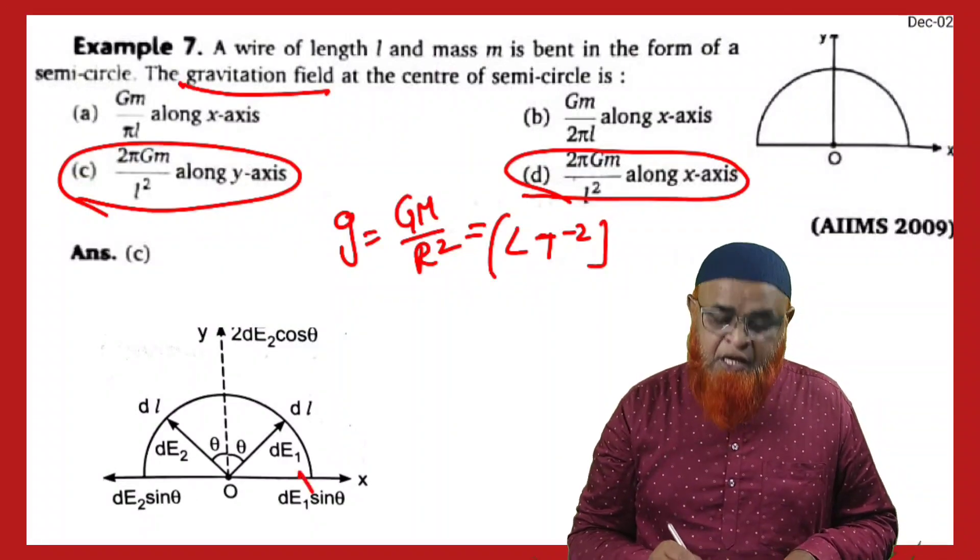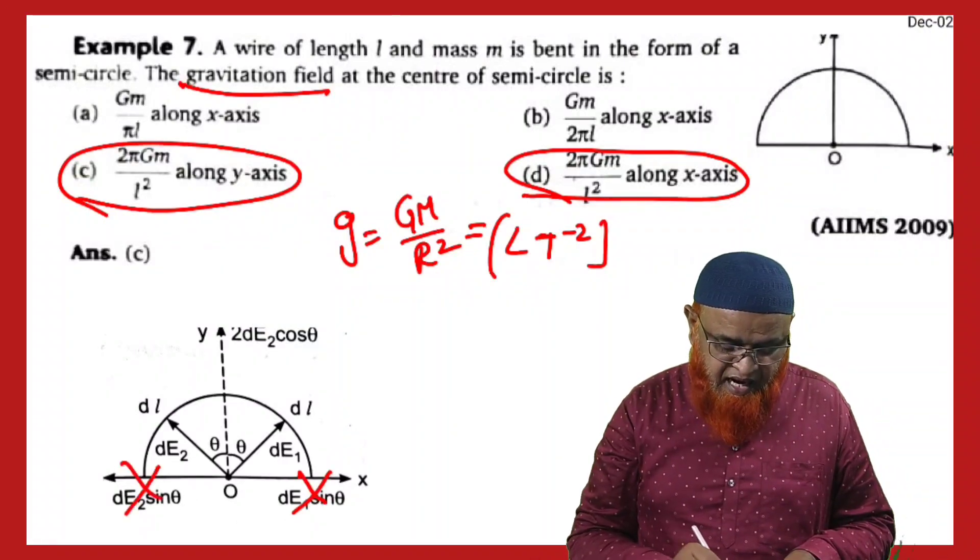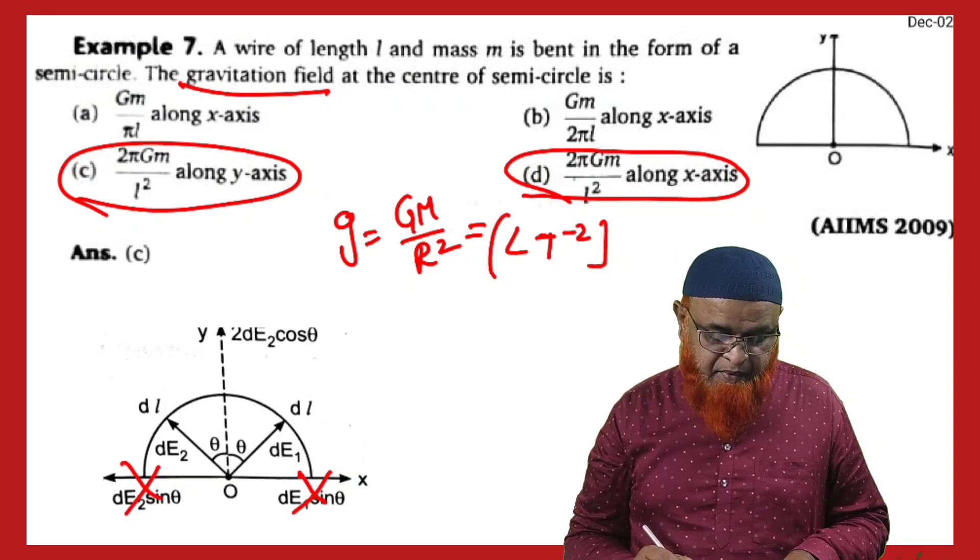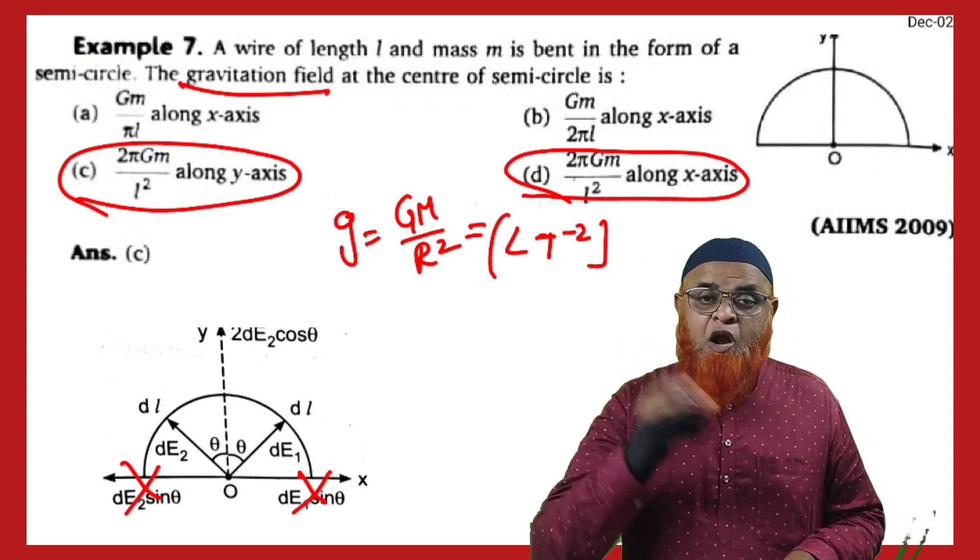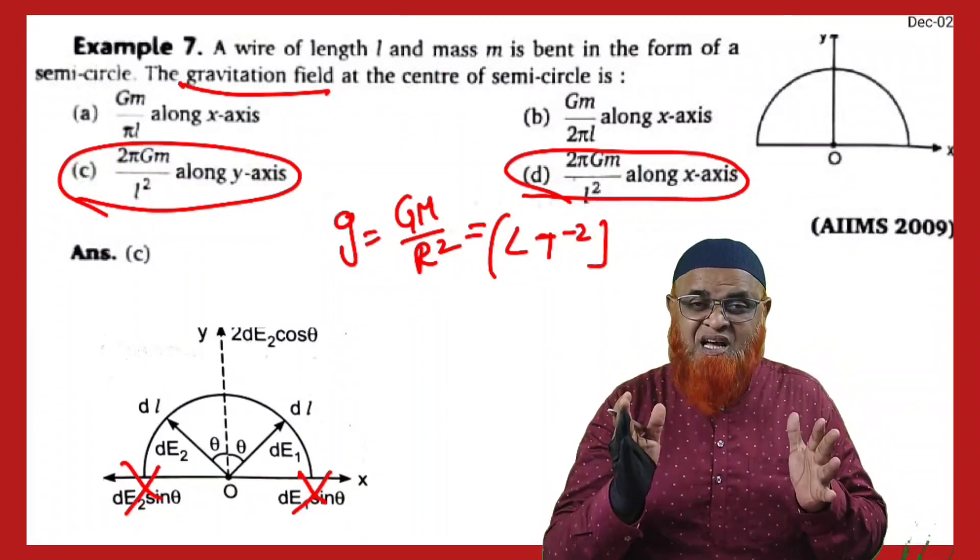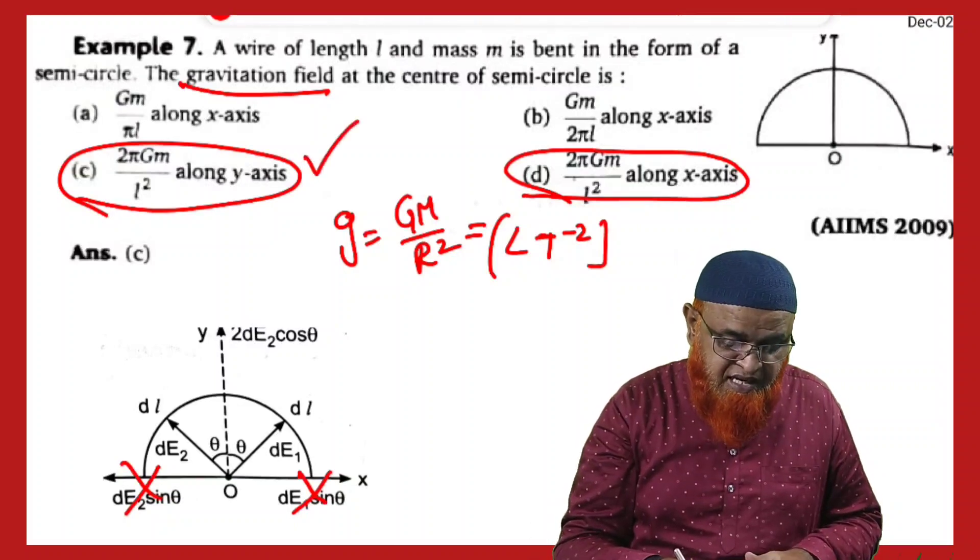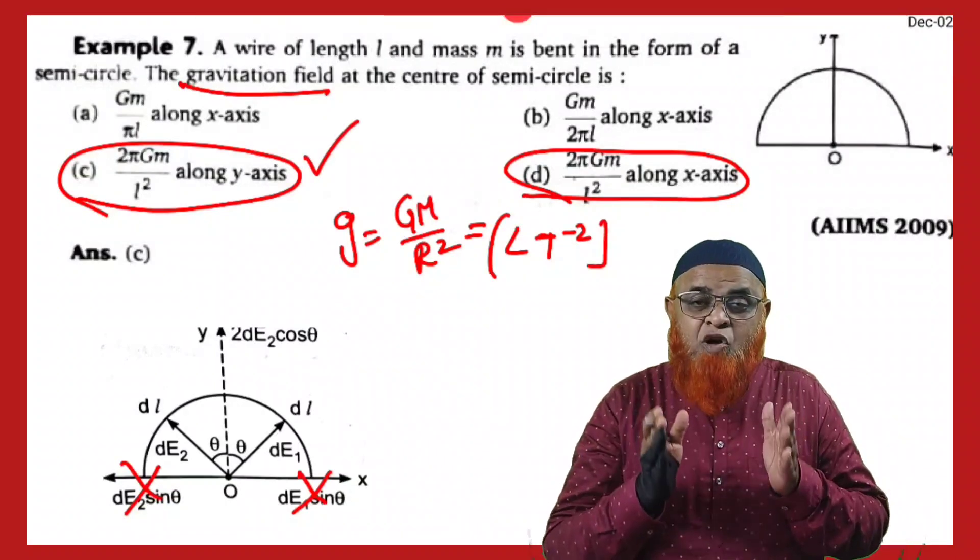If you observe here in this diagram, you can see that dE sine theta and dE sine theta get cancelled. Only along the y-axis we have to select the correct option. So the correct option is C because there are components only along the y-axis. X-axis components have been already eliminated.